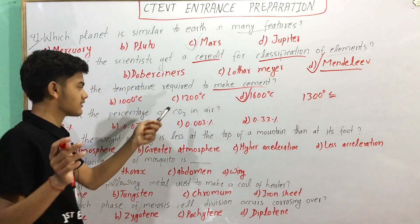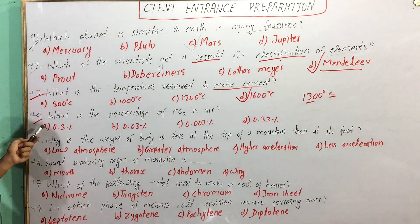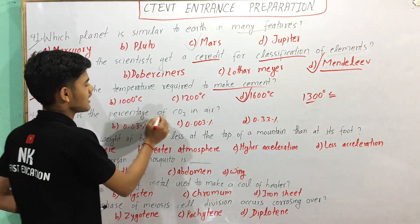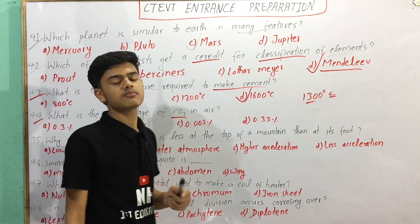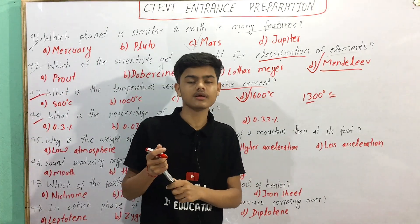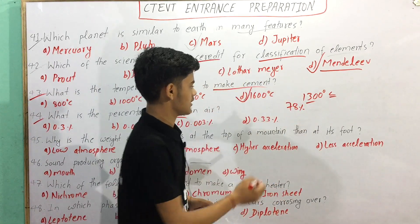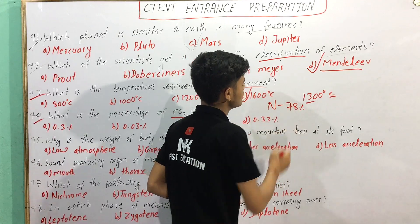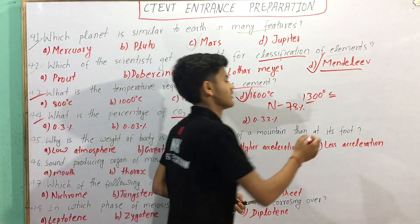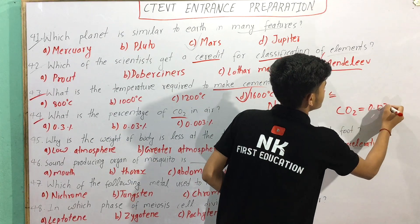I am going to ask you: what is the percentage of CO2 in the air? The nitrogen percentage is greater than the carbon dioxide percentage. Nitrogen is 78% and carbon dioxide is 0.03%.